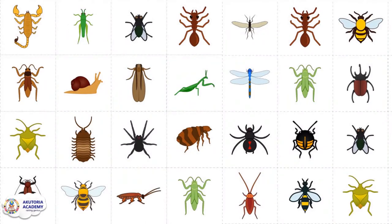Every insect body is divided into these three major parts. You can see a variety of insects here, and consistently each insect has a head, a thorax, and an abdomen. Some could have larger heads, or a larger thorax, or larger abdomen, depending on the insect, the environment, and the things they do.